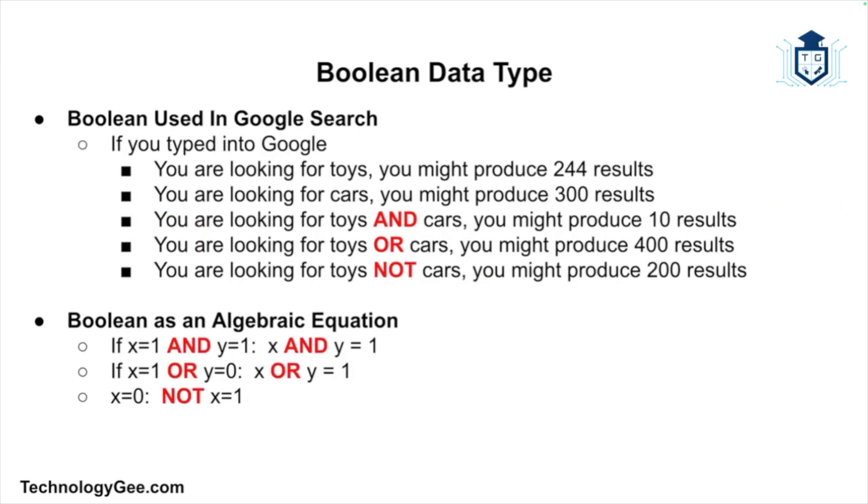On your screen is an example of Boolean used in the Google search algorithm. If you typed toys you might get 244 results. If you typed cars, you might get 300 results. However, if you typed toys AND cars, you might get 10 results. If you typed toys OR cars, you might get 400 results. And if you typed toys NOT cars, you might get 200 results. At the bottom we have Boolean expressed as an algebraic equation. If x equals 1 and y equals 1, then x AND y equals 1. If x equals 1 or y equals 0, then x OR y equals 1. Then we have x equals 0, and that's NOT equal to x equaling 1.